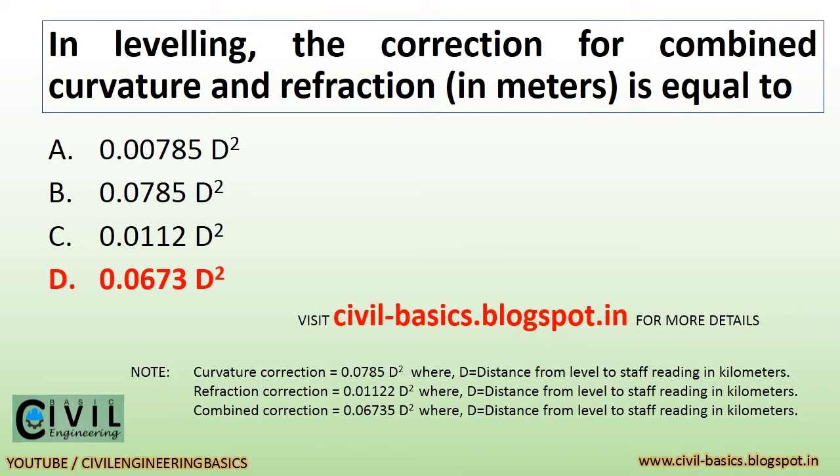The correction for combined curvature and refraction, in meters, is equal to 0.0673 D-square.